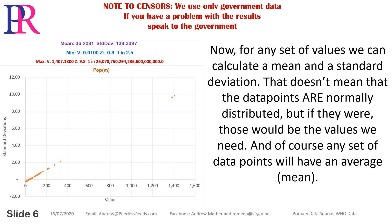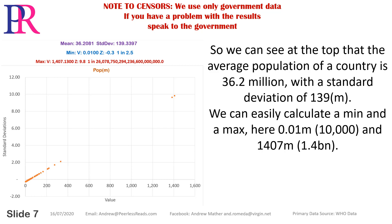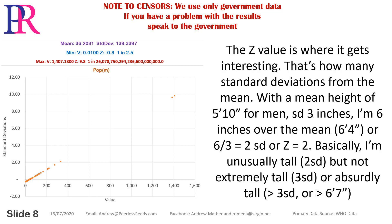Any set of data points will have an average mean, so we can see at the top that the average population of a country is 36.2 million with a standard deviation of 139 million. We can easily calculate a min and a max: 0.01 million (10,000) and 1,407 million (1.4 billion). The z-value is where it gets interesting.